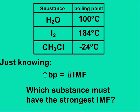If you said I2, you're correct. I2 has the highest boiling point, so it must have the highest intermolecular forces, while CH3Cl has the lowest boiling point, so it has the weakest attraction between its molecules.